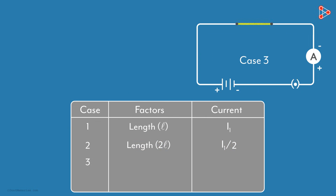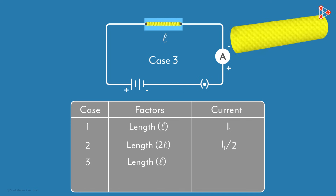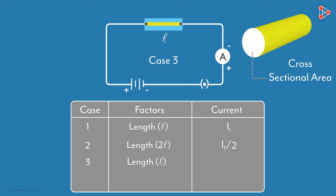In the third case, we replace the wire with a thicker nichrome wire with length L. We are just increasing the thickness of the wire without changing the original length L. Now if you are increasing the thickness of the wire, it simply means we are increasing the cross-sectional area — let's call it A. When you measure the current, you will notice that it's more than the original current I1.